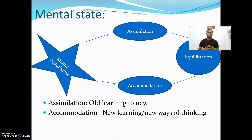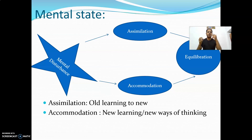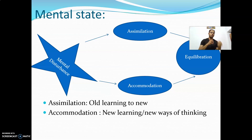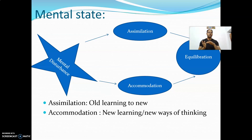When a child confronts a new situation, mental disturbance occurs, and it will be equilibrated through assimilation or accommodation. Assimilation is the process in which the child knows new things by linking them with already known things. In the previous example, the child accommodated the butterfly and tried to assimilate it with the bird, and after that, the child further accommodated the bird.